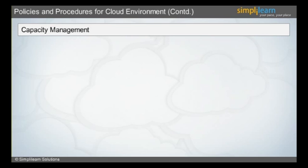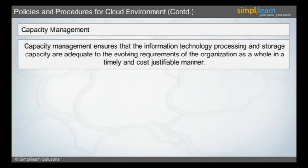Capacity management is a process used to examine the kind of systems that are in place. It is also used to measure their performance and to determine the pattern in usage that enables the capacity planner of an organization to predict the demand. Capacity management ensures that the information technology processing and storage capacity are adequate to the evolving requirements of the organization as a whole in a timely and cost justifiable manner.